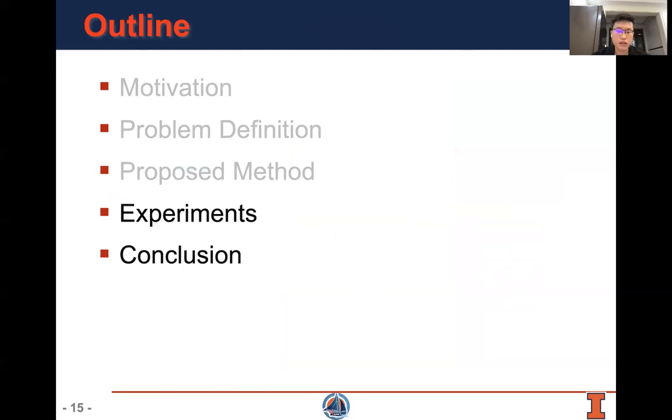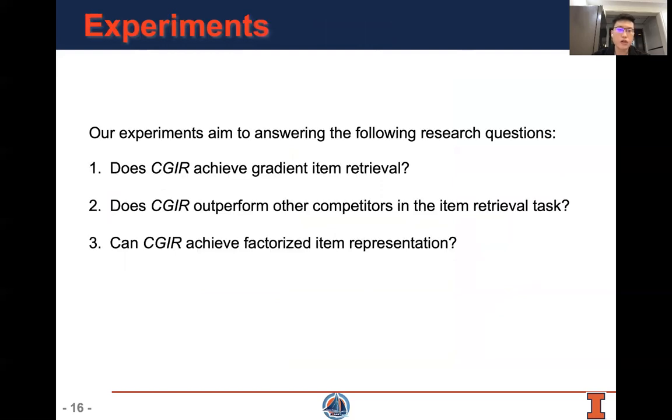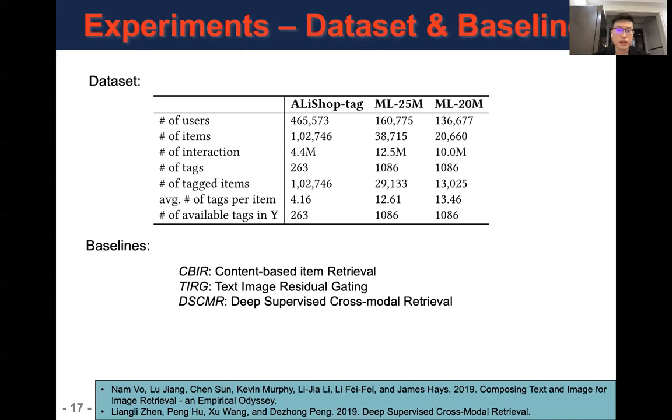All experiments aim to answer the following research questions. First, does CGR achieve gradient item retrieval? Second, does CGR outperform other competitors in the item retrieval task? Third, can CGR achieve factorized item representation? We conduct experiments on three datasets: Ali-shop tag, MovieLens 25 million, and MovieLens 20 million. The Ali-shop tag dataset is collected from Alibaba e-commerce platform Taobao. We adopt three baselines: content-based item retrieval text, image residual gating, and deep supervised coarse model retrieval.